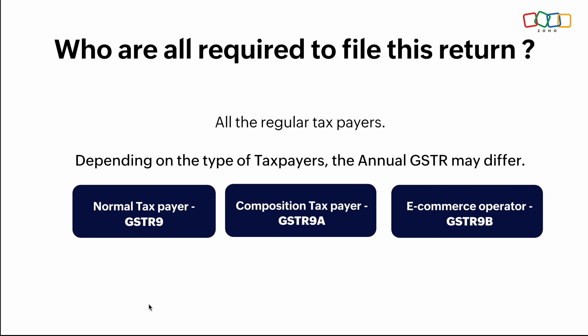Some taxpayers might have multiple GST registrations in the same state for a single company. In that case, they need to know whether to file for the organization or per GSTIN. The GSTR 9 form is essentially per GSTIN — they need to file separately for each GSTIN, not for a single organization.